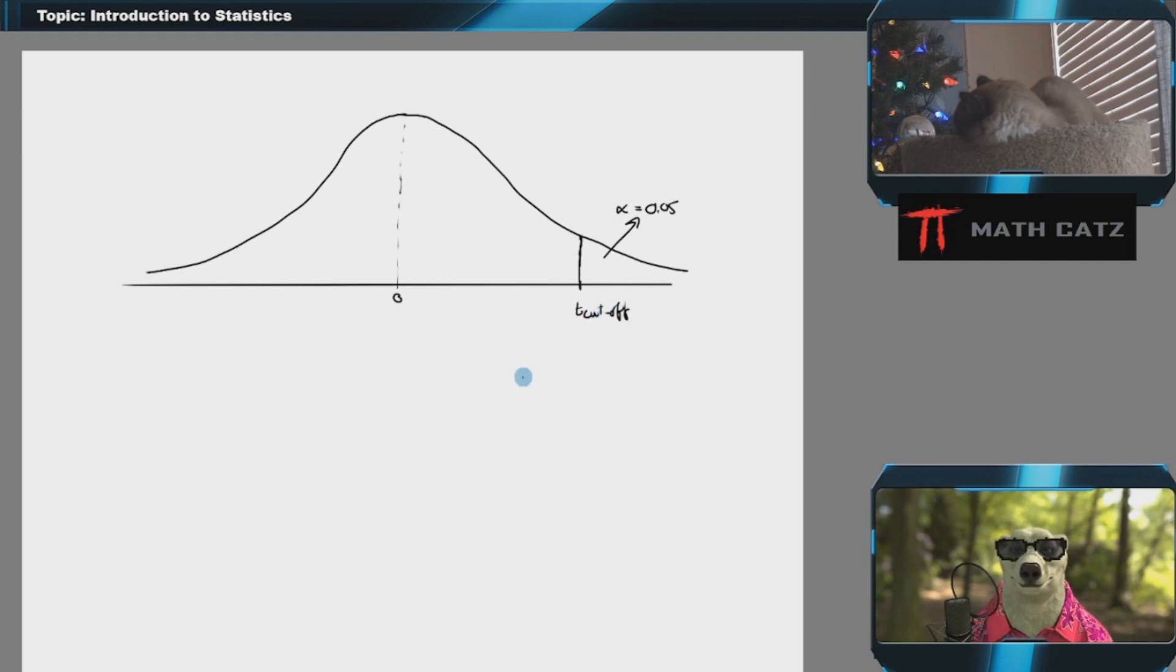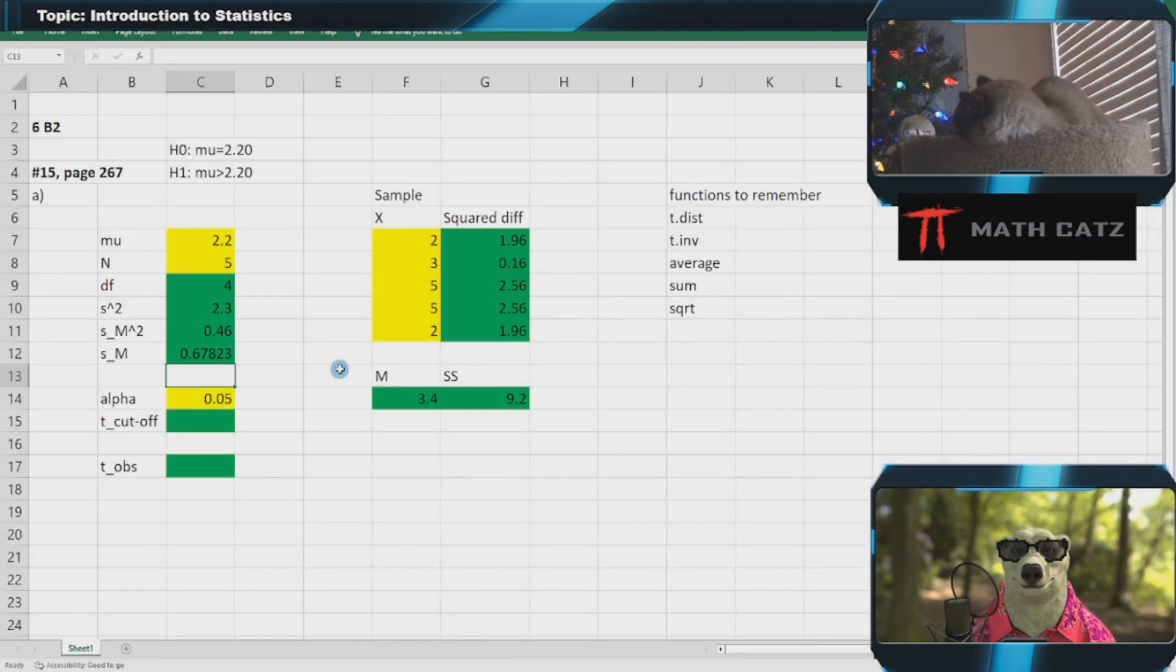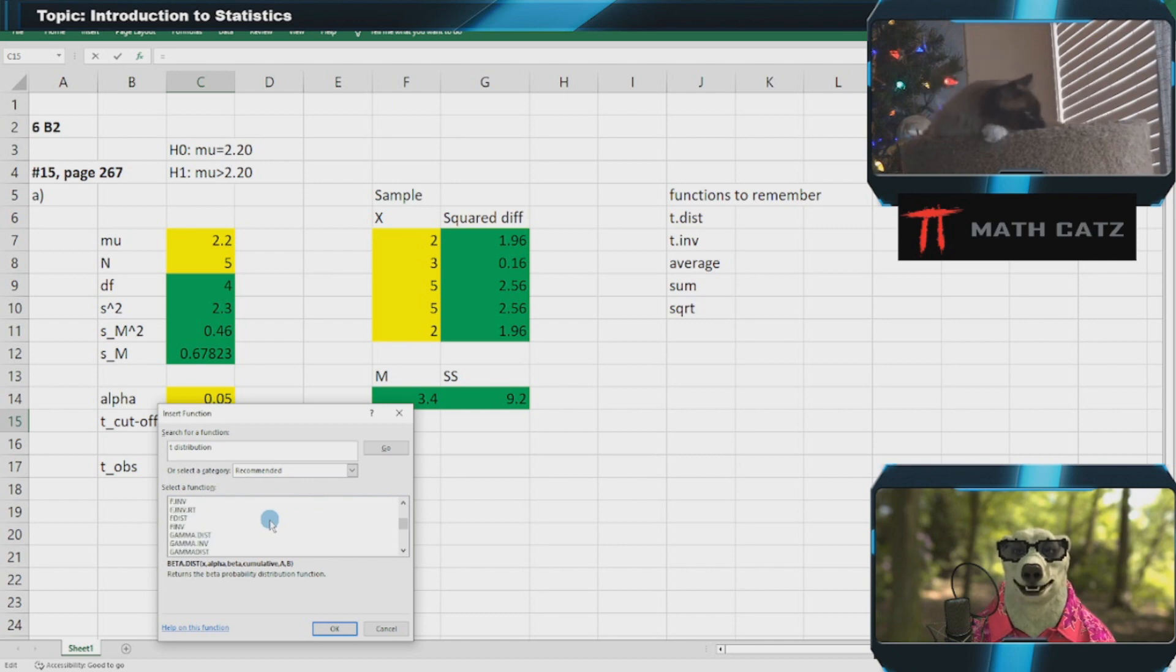We can look it up in a table or use Excel, which has all these tables already in there as functions. I don't have to memorize these. I'll search for t distribution. There's a bunch of them, I'll look through the list. They're alphabetized.